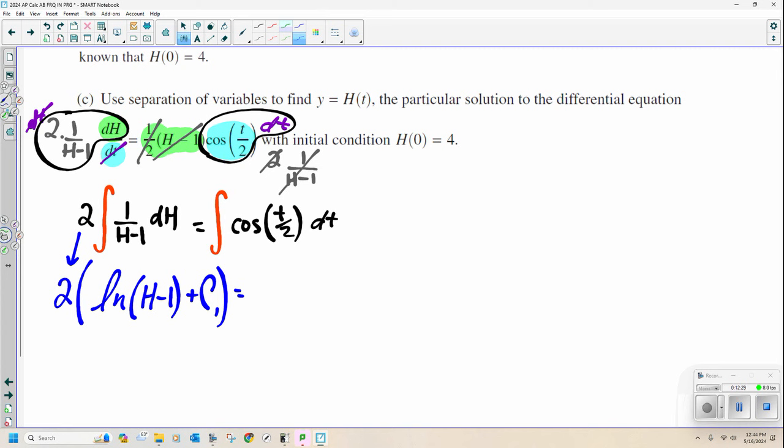But if u equals t over 2, or 1 half t dt, well, I just want to substitute. Okay? So now I'm integrating the cosine of u. But now I've got to find the derivative here. So du is just 1 half dt.